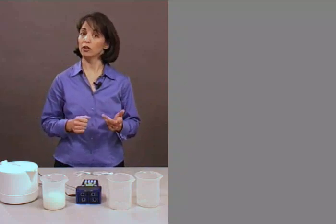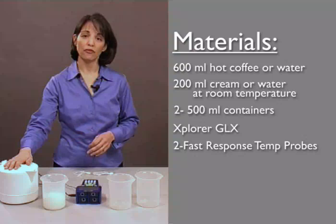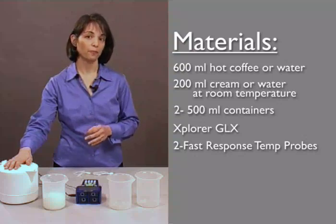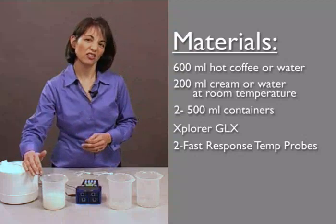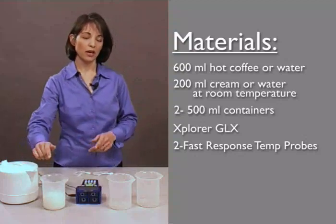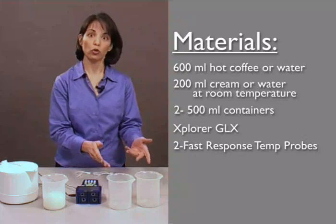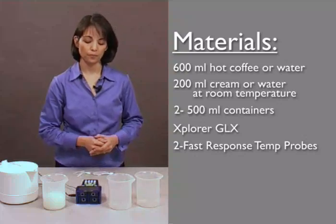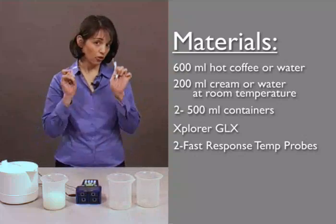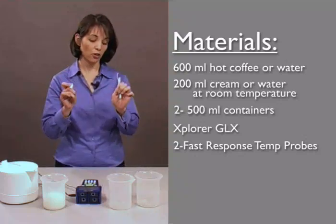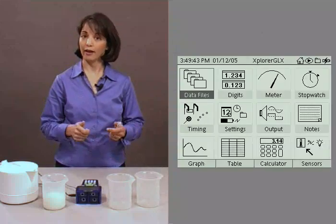So if you're going to do this with us, you need about 600 milliliters of coffee or water, the hotter the better, 200 milliliters of cream. This teacher likes a lot of cream in his coffee. And two containers that will hold at least 400 milliliters each. Of course, you also need your GLX and the two provided temperature probes. We're going to have our GLX already turned on, and let's get started.